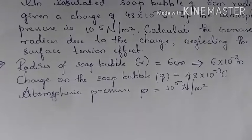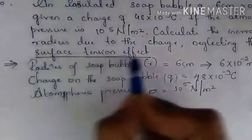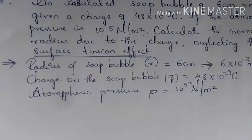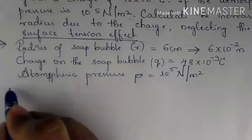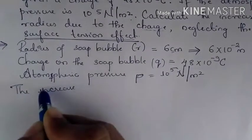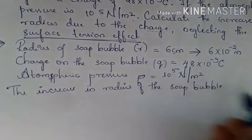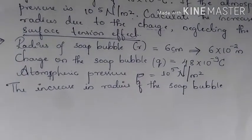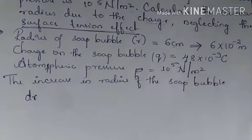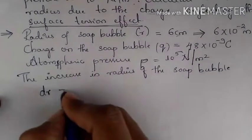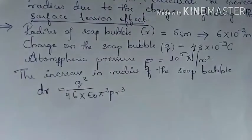We need to find the increase in radius of the soap bubble. The expression for change in radius is: dr = Q² / (96 × ε₀ × π² × P × R³).